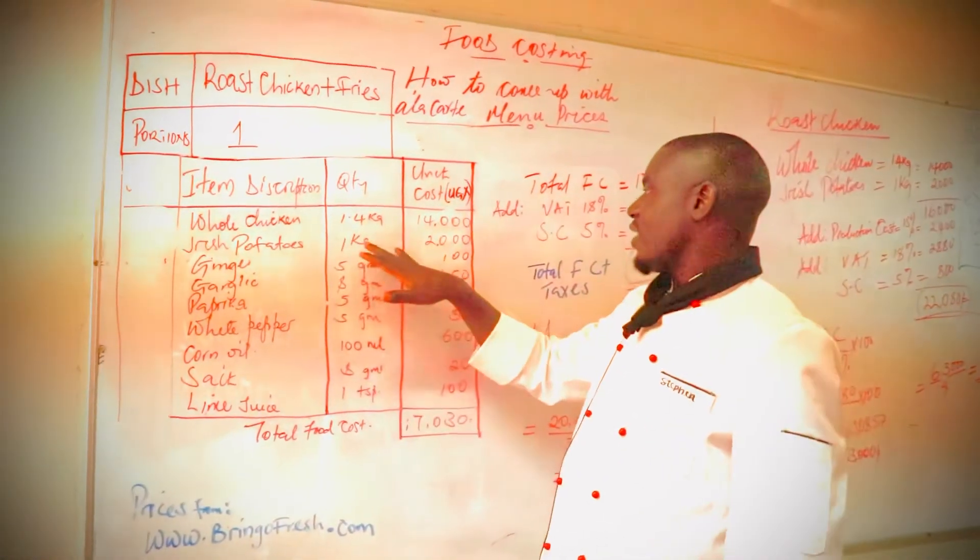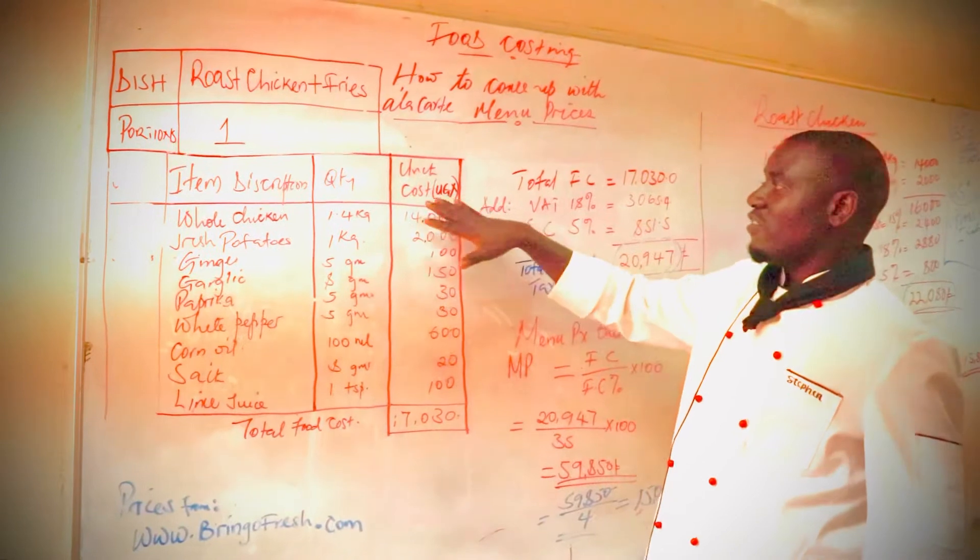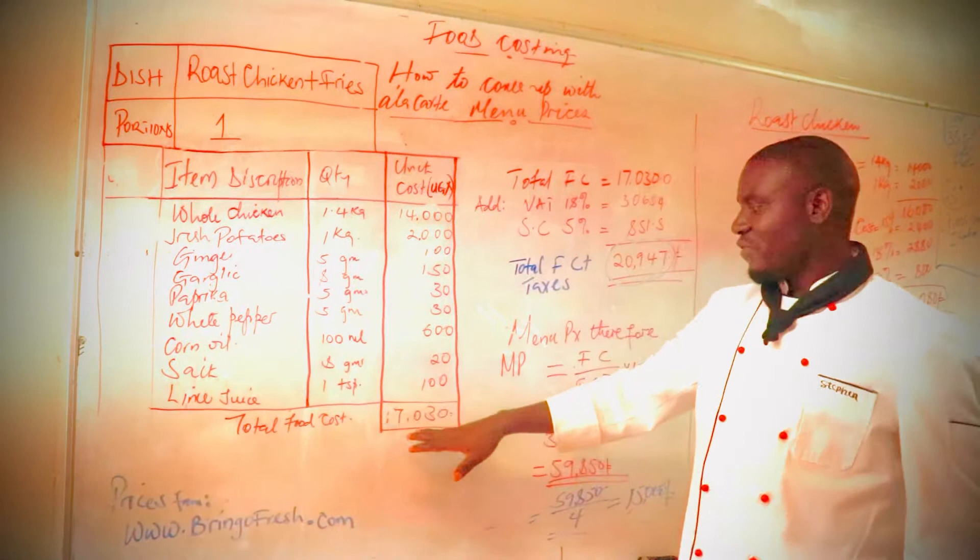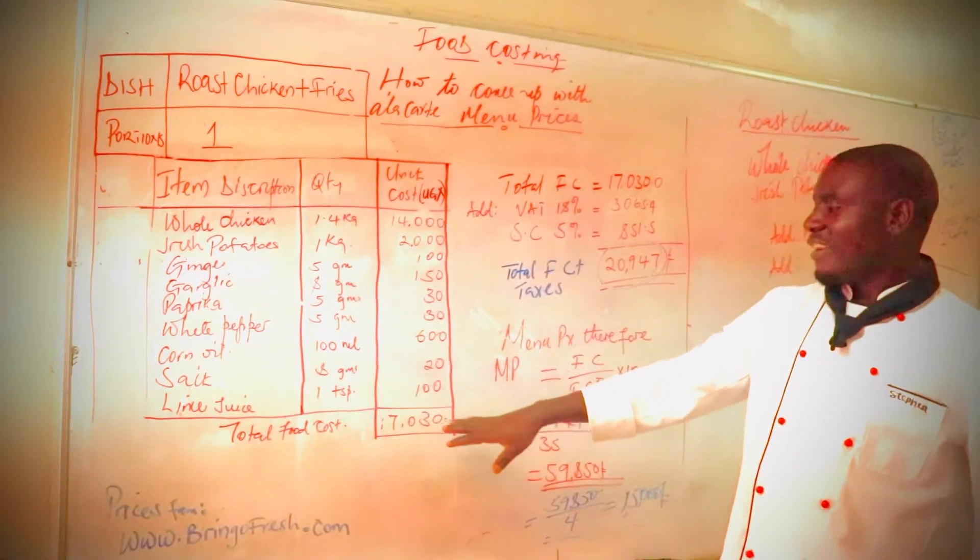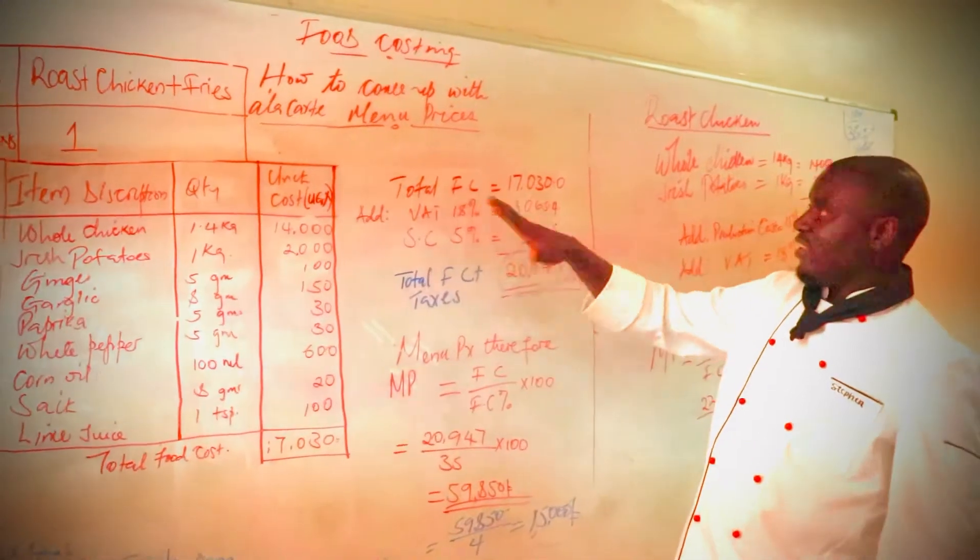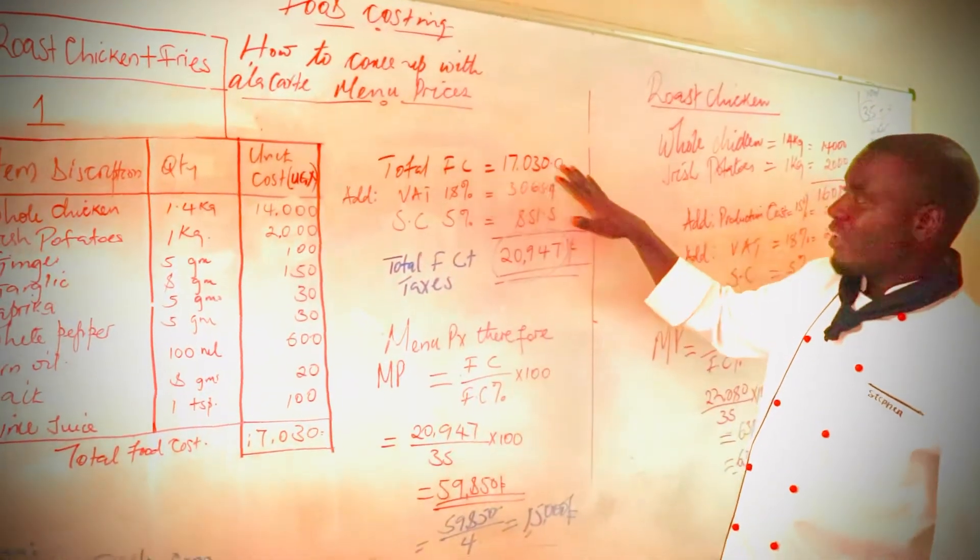The Irish potatoes is 1 kg which is 2,000, this is Ugandan shillings which is giving us up to a total food cost of 17,030 shillings. So the total cost which is already here, 17,030 shillings.